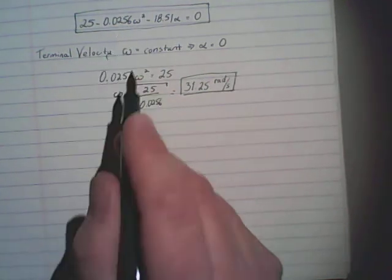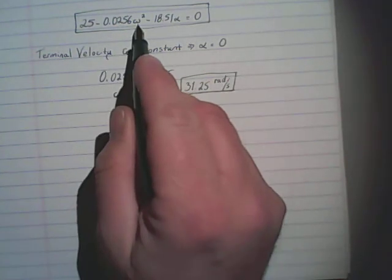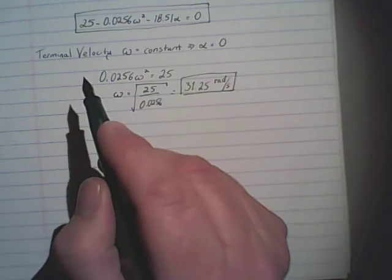So, again, going back to this equation, if we have a speed of 20 radians per second, we should be able to solve, then, for alpha. There's only one unknown.